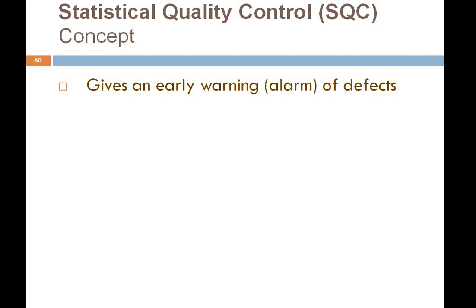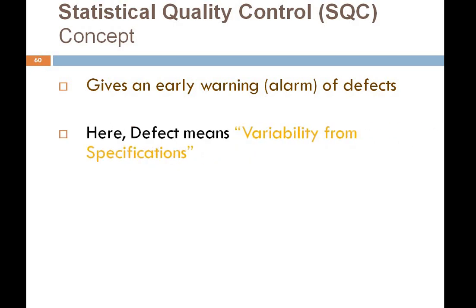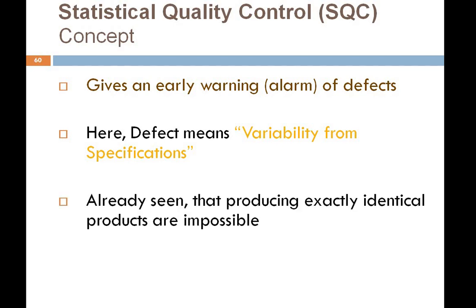It gives an early warning of defects. From a quality perspective, defect means variability from specification. The standards and benchmarks we have set — if the finished product does not meet those specifications, there are certain deviations and variations. Those variations are what we call defects, and they can be on the upper side or the lower side. The more the variation, the more defective the product.